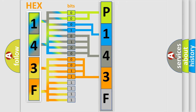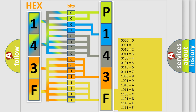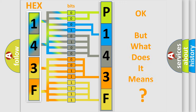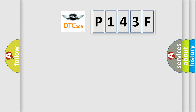A single byte conceals 256 possible combinations. We now know in what way the diagnostic tool translates the received information into a more comprehensible format. The number itself does not make sense to us if we cannot assign information about what it actually expresses. So, what does the diagnostic trouble code P143F interpret specifically, for mini car manufacturers?